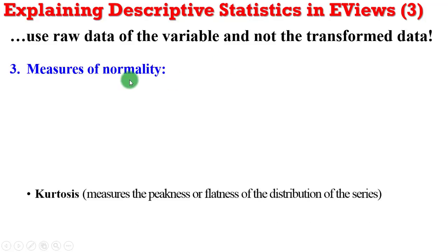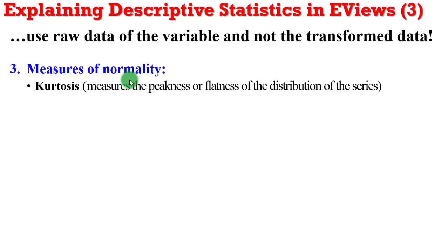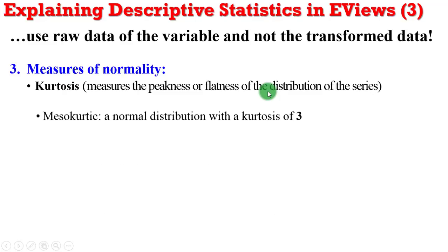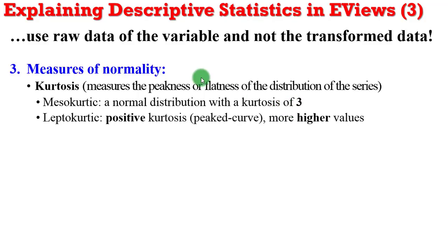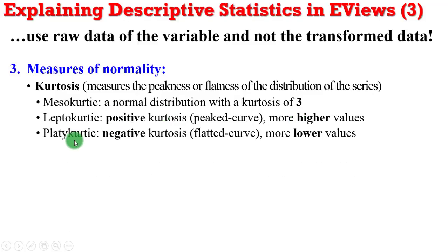On measures of normality, we are only considering two — kurtosis and skewness. Kurtosis tells us about the thickness or flatness of the distribution of the series. If we say a distribution is mesokurtic, it simply means it embodies a normal distribution with a kurtosis value of 3. If it is leptokurtic, it means it has a positive kurtosis — it is a peaked curve indicating there are more higher values than the sample mean. Being platykurtic implies it has a negative kurtosis — a flat-headed curve with more lower values than the sample mean.